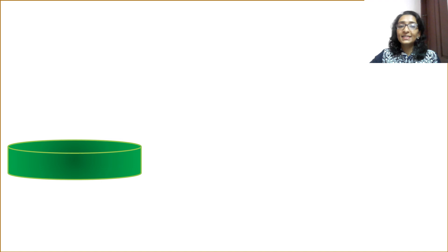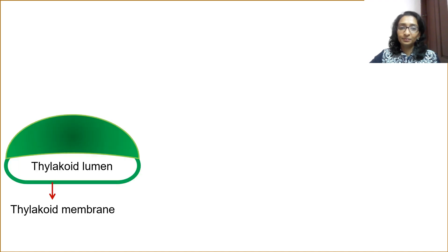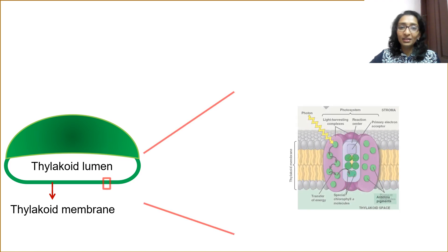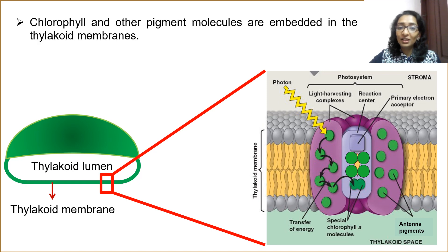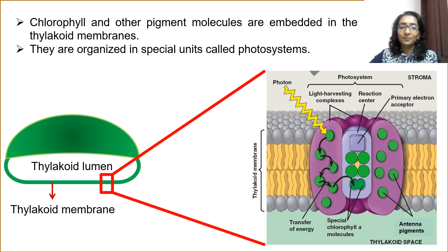Now, consider a single coin-like thylakoid. If we cut it into half, we can see the thylakoid lumen enclosed by the thylakoid membrane. If we zoom into a portion of the thylakoid membrane, then we can see that chlorophyll and other pigment molecules are embedded in the thylakoid membranes. These pigments are organized in special units called photosystems.